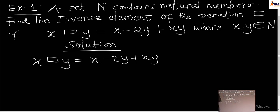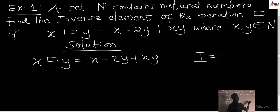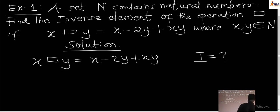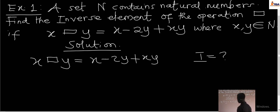We are told to find the inverse element, so we are looking for I. Although we are looking for the inverse element, we still need to get the identity element first. For inverse element I, we say X operation I must give us the identity element, in accordance with the law of the inverse element.